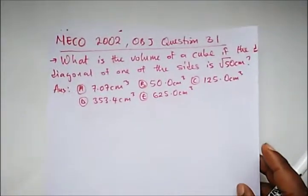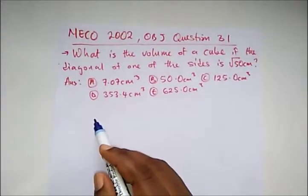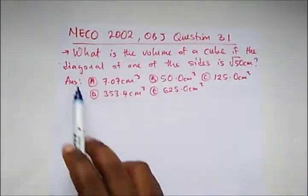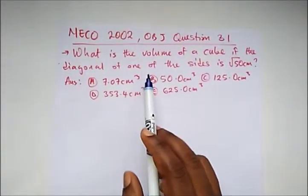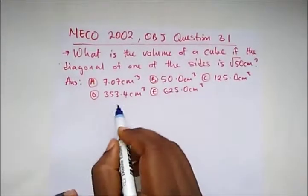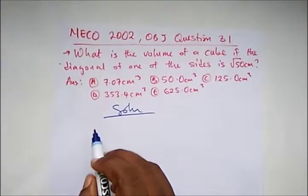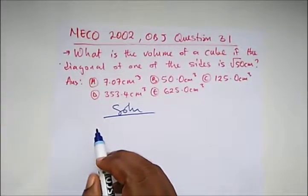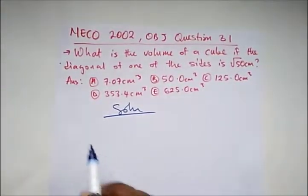Let's be fast, I want this video a bit short. Here we have a question from NECO 2002, OBJ question 13. What is the volume of the cube if the diagonal of one of the sides is √50? The formula for finding the length of the side diagonal is x√2.